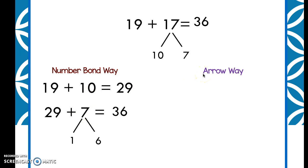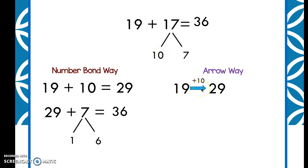Let's try the arrow way. We're still going to keep our number bond and break apart 17 into 10 and 7. I'm going to start with 19, and instead of writing a number sentence, I'm going to draw an arrow and write plus 10 at the top, because I'm adding 10 to 19 — that equals 29. Then I won't forget about 7; I'll draw another arrow, plus 7 more. I can count on 7 more, or I can take 1 away from 7 to make 30 and add 6 more. 29, 30, 31, 32, 33, 34, 35, 36. Same answer!